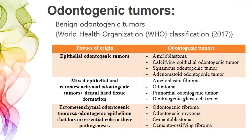In the previous lecture, we covered the classification of benign odontogenic tumors according to their tissue origin: epithelial odontogenic tumors, which mainly originate from epithelial components; mixed epithelial and ectomesenchymal odontogenic tumors; and purely ectomesenchymal tumors where the epithelium present has no role in pathogenesis. In today's lecture, we will discuss the remaining divisions.